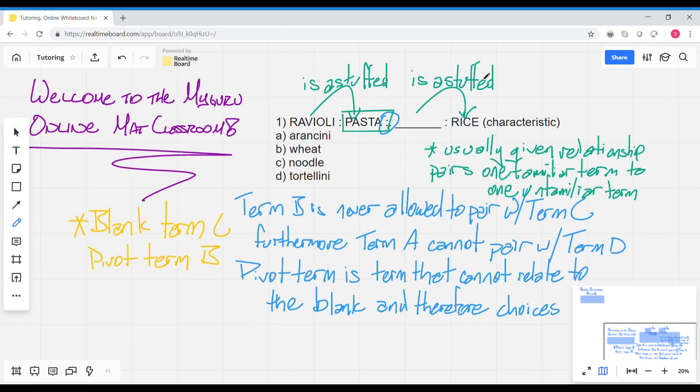Now, the first thing is eliminate answer choices that clearly are not going to be relevant, even if you're not sure about all of them. If you have an uncertain term like arancini, if you know what arancini is, this is your answer choice. But let's pretend that you don't. You put a little question mark next to this one and hold on to it because it could be right.